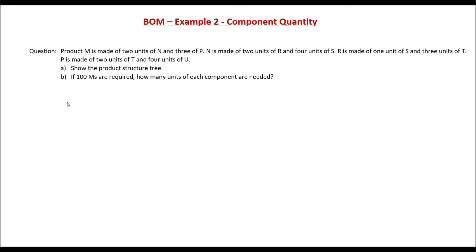Welcome to this video on Bill of Materials, where we will look at an example to find out the component quantity. The question given to us is: product M is made of two units of N and three units of P. N is made of two units of R and four units of S. R is made of one unit of S and three units of T. P is made of two units of T and four units of U. Show the product structure tree, and if 100 M's are required, how many units of each component are needed?